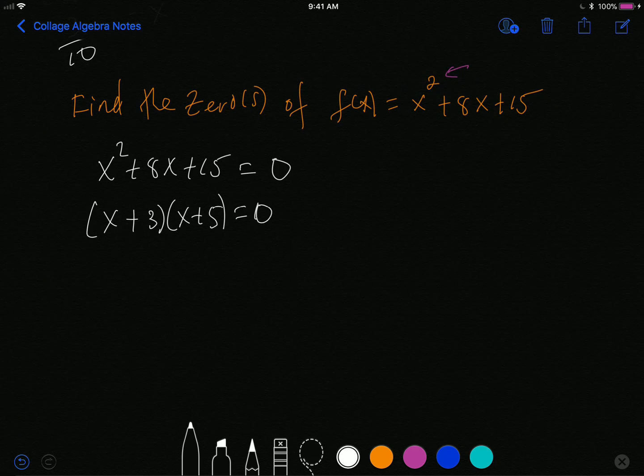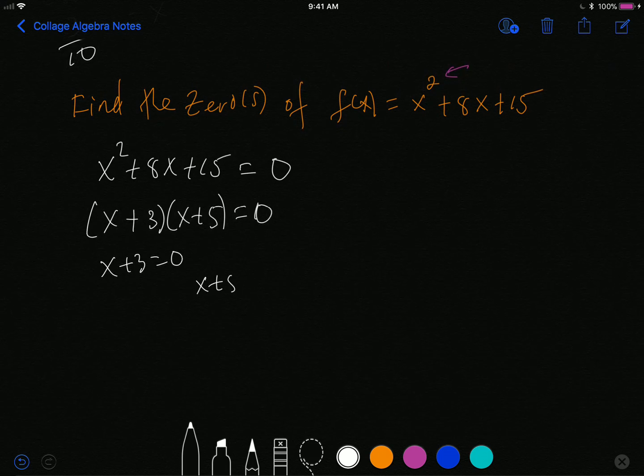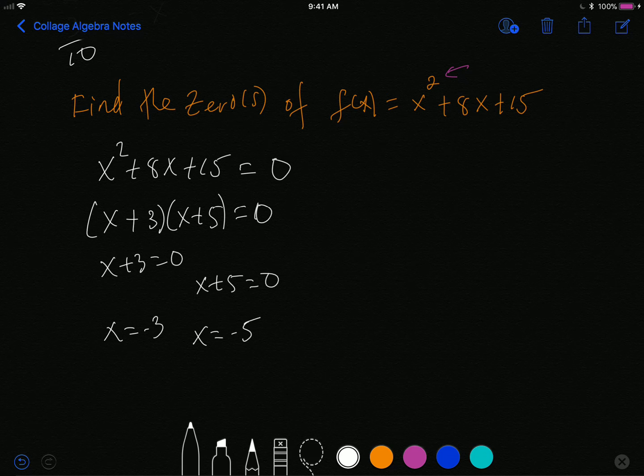This time I will factor the problem. This factors into x plus 3 times x plus 5 equals zero. Then you have x plus 3 equals zero and x plus 5 equals zero, so you get x equals negative 3, x equals negative 5. And so this equation right here has two zeros, two roots, two solutions, two x-intercepts.